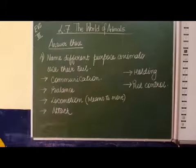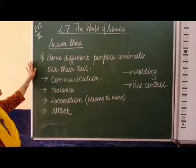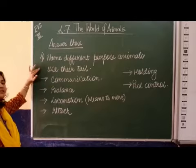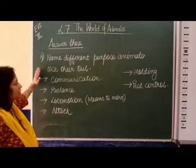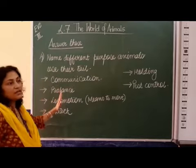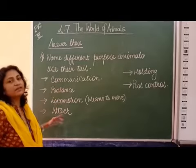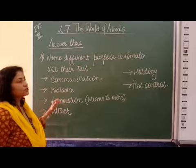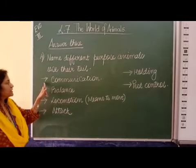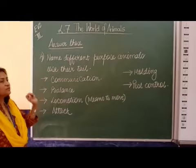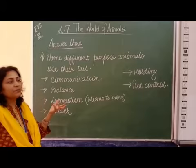We will shift to other questions. Our fourth question is: what are the different purposes for which animals use their tail? Already in the previous module I have shown the different purposes. Again I will tell you — these things are not even in your textbook, but I have already differentiated them so that it becomes easy for you to understand. Now, what is the first thing? Communication. How do they communicate with each other? Animals communicate with each other with the help of their tail.